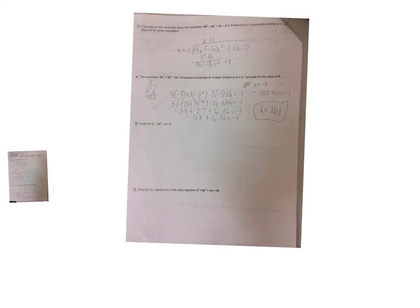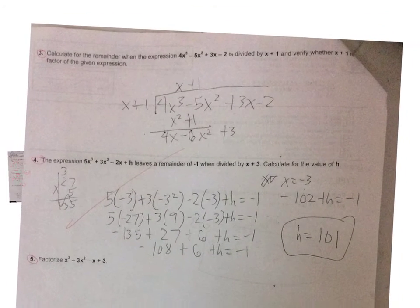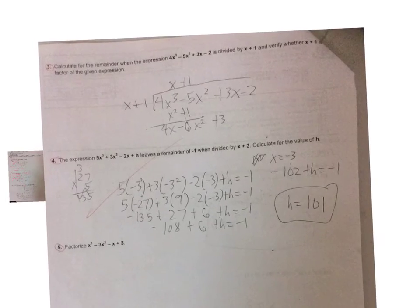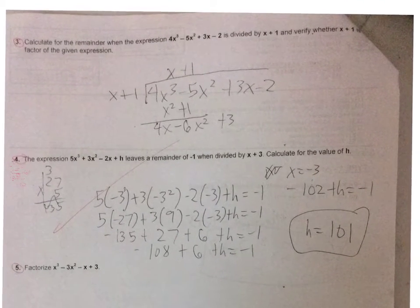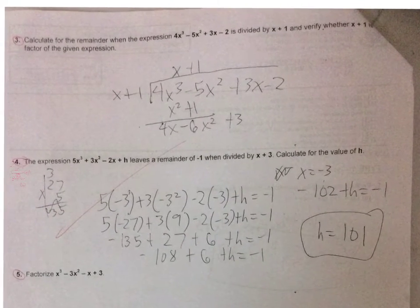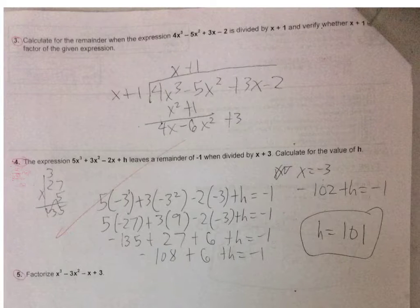Let's see the second page. You got number four correctly, but let's see number three. Number three says: calculate the remainder when the expression 4x³ - 5x² + 3x - 2 is divided by x + 1 and verify whether x + 1 is a factor of the given expression.